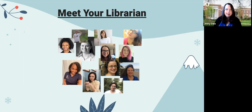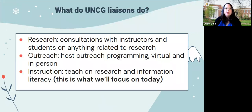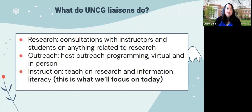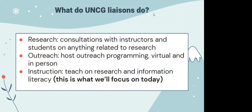Our department in the library is called research, outreach, and instruction — those are the three big areas liaisons focus on. With research, that's consultations with instructors, faculty, students, and staff with more in-depth research questions. That can run from a student in a 101 course needing help figuring out what a peer-reviewed article is, to a faculty member writing a scholarly journal article needing help locating a source. We get to work with a lot of different people on a lot of different things.